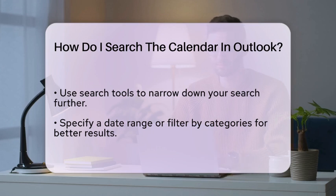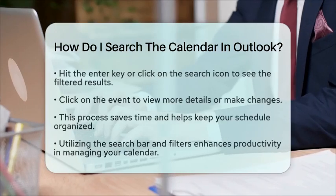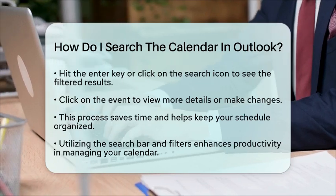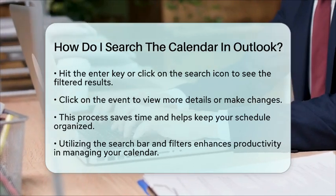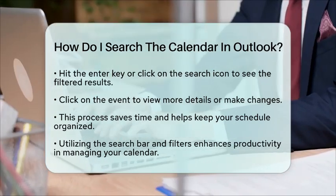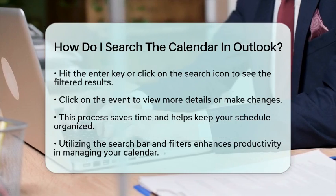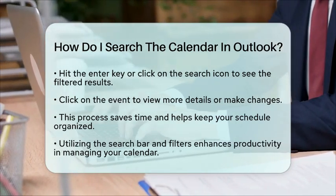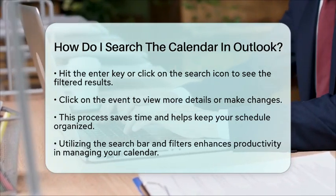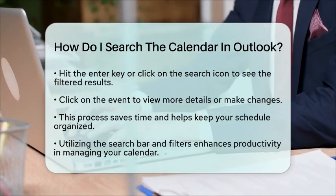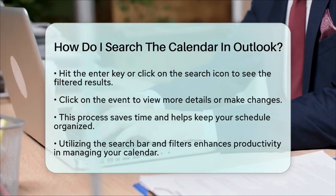Once you find the event you are looking for, you can click on it to view more details or make any necessary changes. This feature not only saves time, but also helps you stay organized and on top of your schedule. In conclusion, searching your calendar in Microsoft Outlook is a simple process that can significantly improve your productivity. By utilizing the search bar and filtering options, you can quickly find the information you need without the hassle of scrolling through your entire calendar.